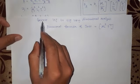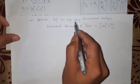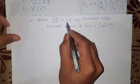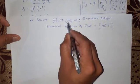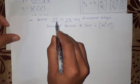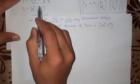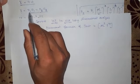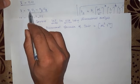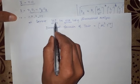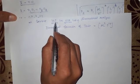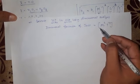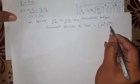Now let us take the help of this formula in conversion. Convert 10 Joule to erg using dimensional analysis. We have to convert 10 Joule to erg — one system of unit into another. The dimensional formula of Joule is the dimensional formula of energy or work, which is ML²T⁻².